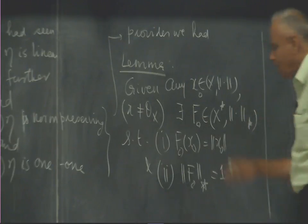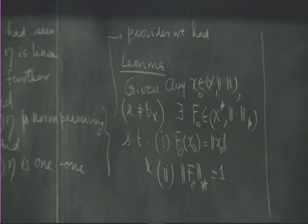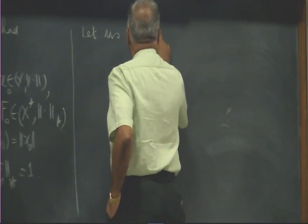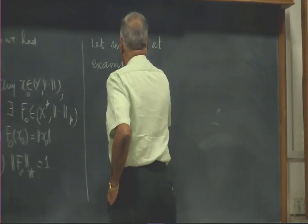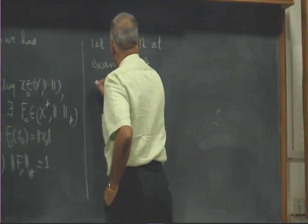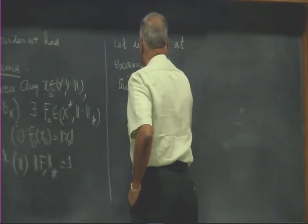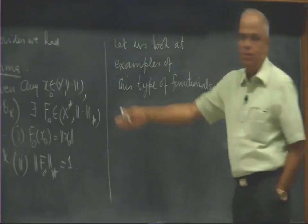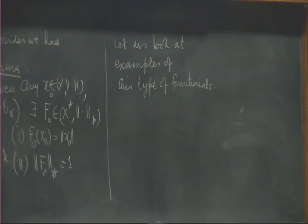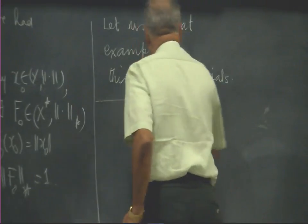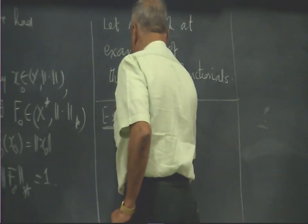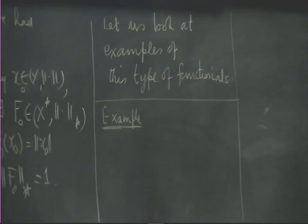This is the essence of the Hahn-Banach theorem. Before going into the Hahn-Banach theorem, let us look at some concrete examples of functionals of this type — the type described in the lemma.